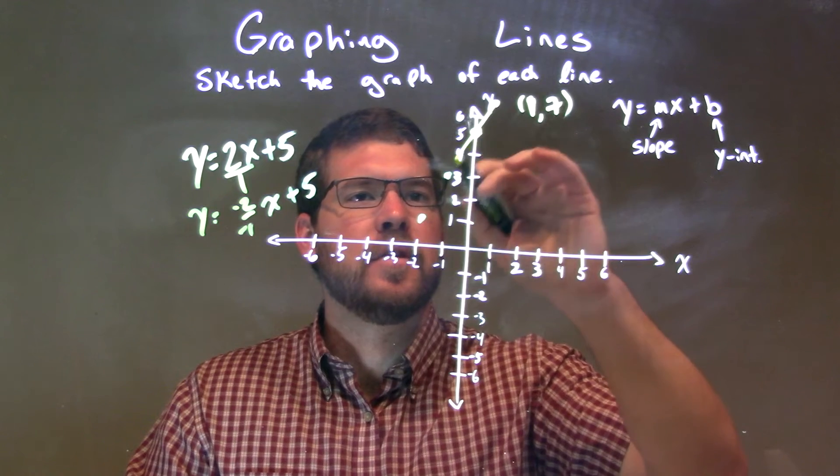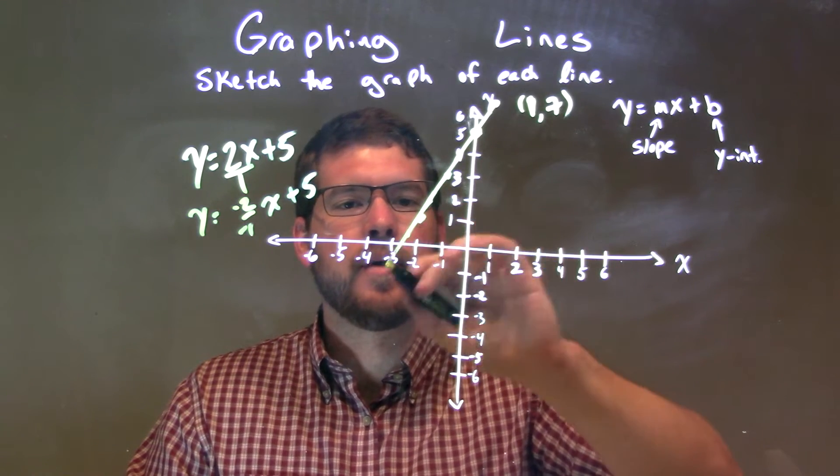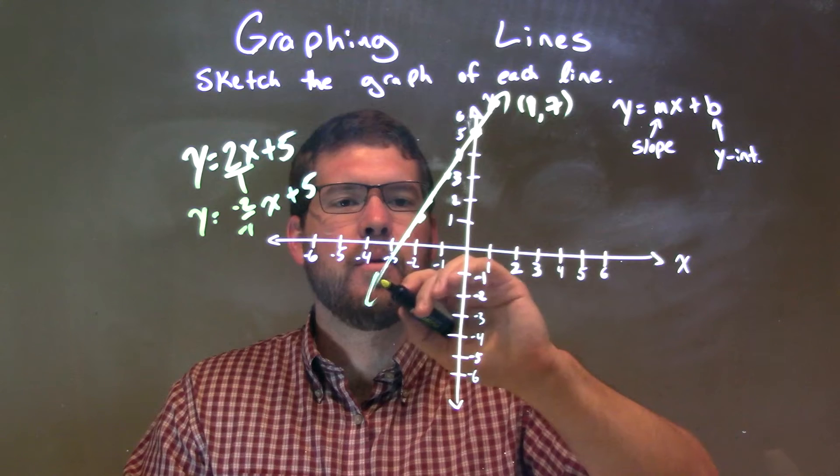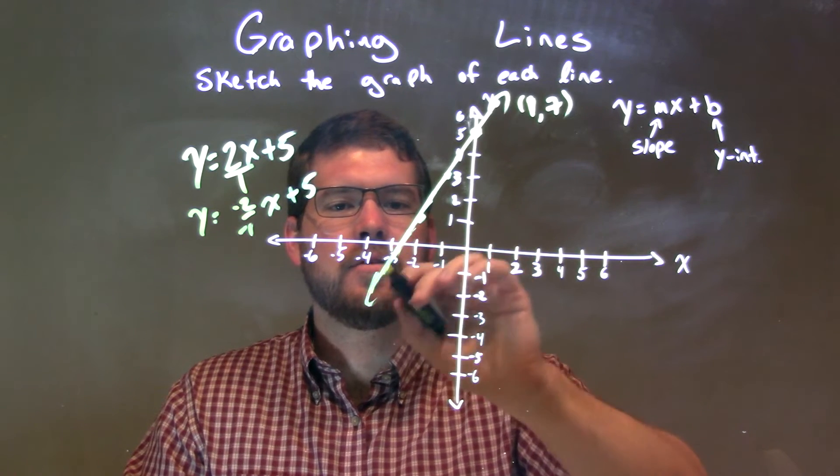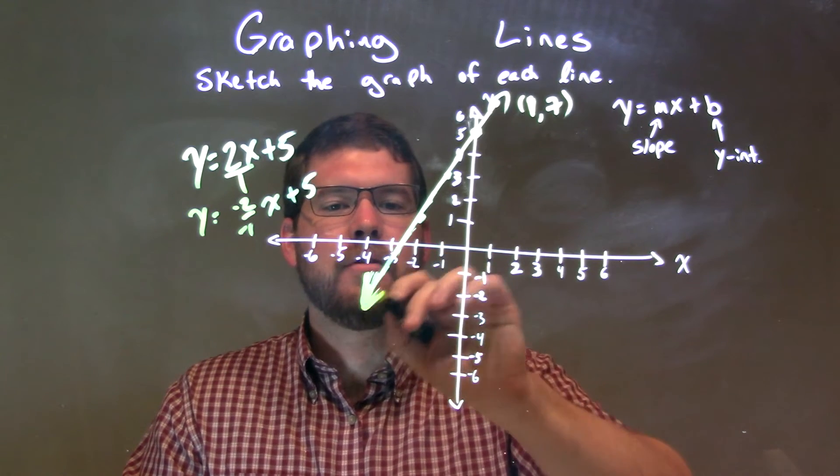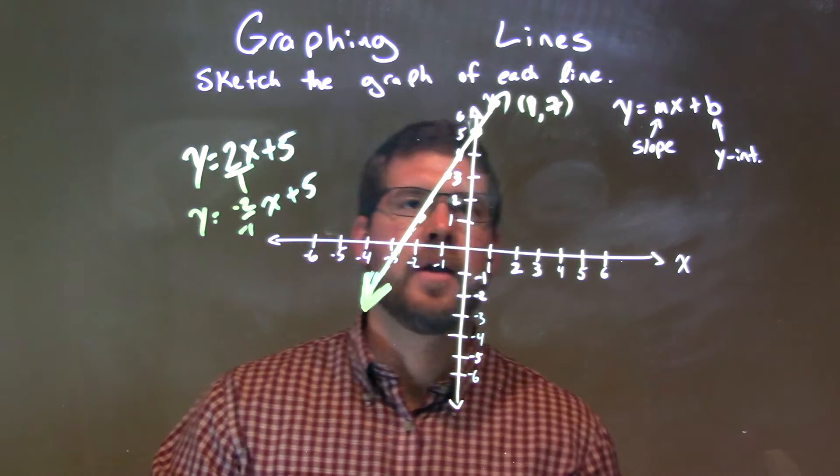So I connect these points. We've got a line right there. Okay? More or less, got it. I think it's good enough for me. And then we have a really big arrow right there.